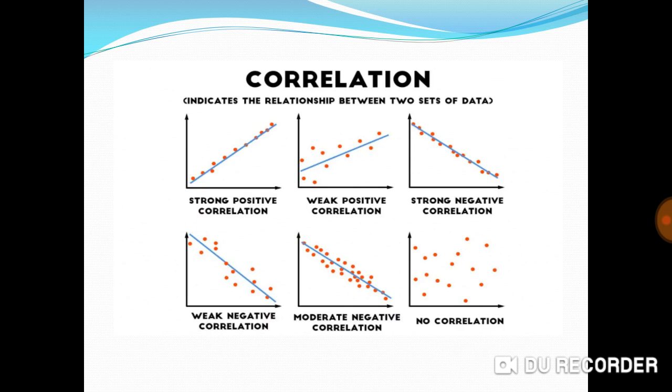Correlation indicates the relationship between two series of data. Strong positive correlation, weak positive correlation, strong negative correlation, weak negative correlation, moderate negative correlation, no correlation.